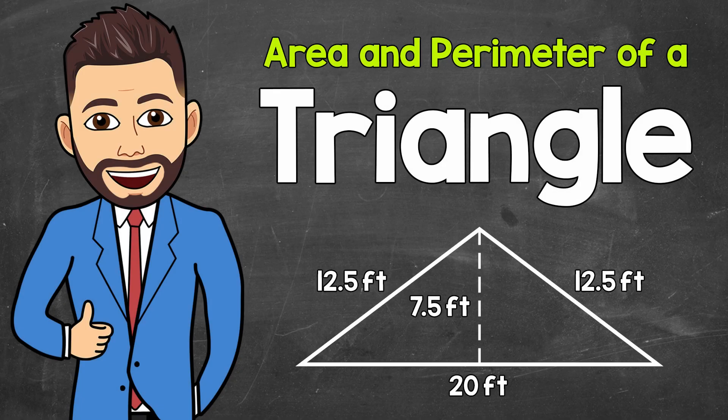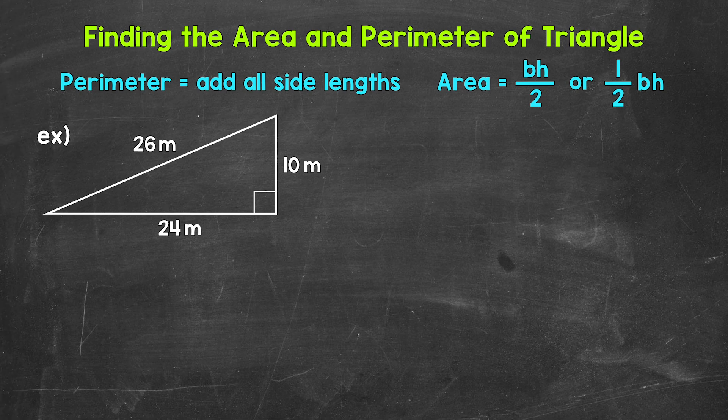Welcome to Math with Mr. J. In this video, I'm going to cover how to find the area and perimeter of a triangle. Now remember, perimeter is the distance around the outside of a shape, and area is the amount of space or surface something covers.